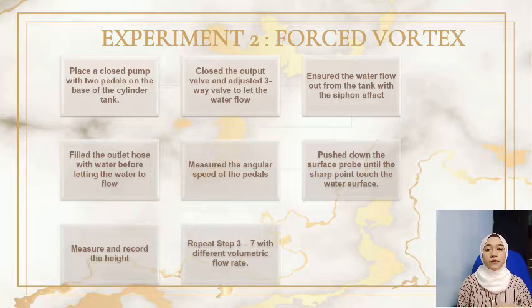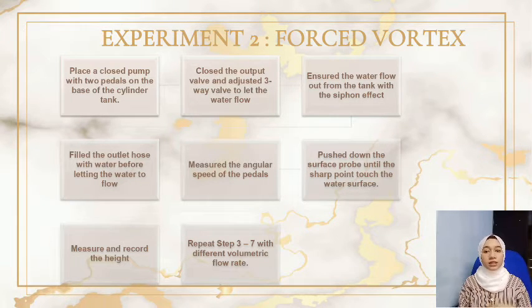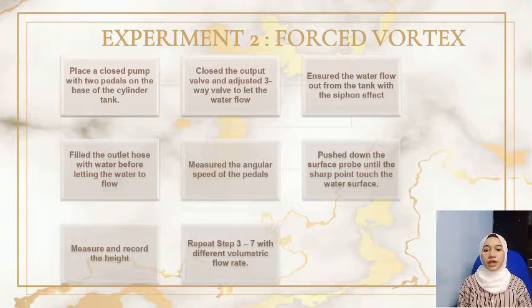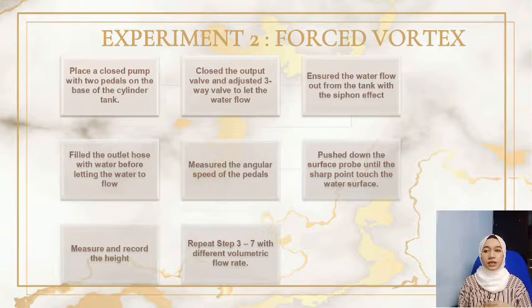Fill the outlet hose with water before letting the water flow into the sub-tank. Measure the angular speed of the pedals by counting the number of circles in a certain time. Push down the surface probe until the sharp point touches the water surface. Measure and record the height from the top of the measuring gauge to bridge H. Lastly, repeat the steps with different volumetric flow rates.